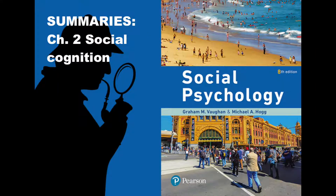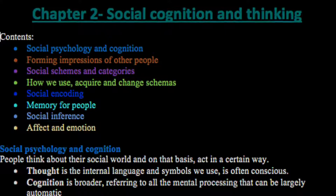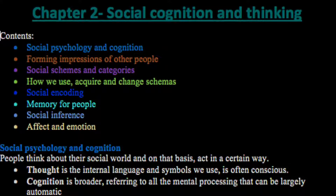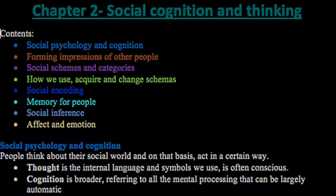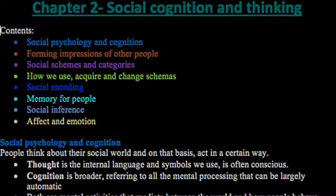These are Chapter 2 notes from the Social Psychology textbook, 8th edition by Vagon and Hogg. The topic is Social Cognition and Thinking. Topics include: Social Psychology and Cognition, Forming Impressions of Other People, Social Schemas and Categories, How We Use, Acquire and Change Schemas, Social Encoding, Memory for People, Social Inference, and Affect and Emotion.